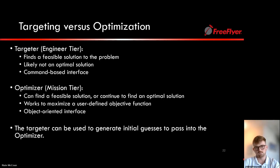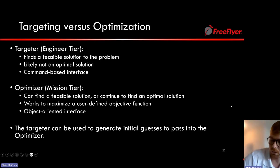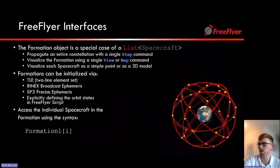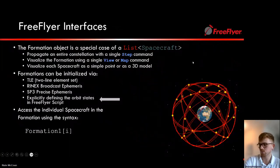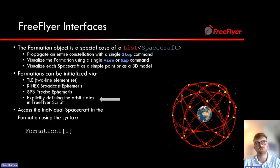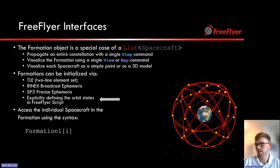Q: How would you handle modeling a constellation with multiple orbits or shells? A: One approach is to create a list of formation objects in FreeFlyer—essentially a list of lists of spacecraft—where each formation represents a specific shell (e.g., shell one at 750 km, shell two at 800 km, etc.). This organizes the script more cleanly, and loop control handles defining elements within those formations.